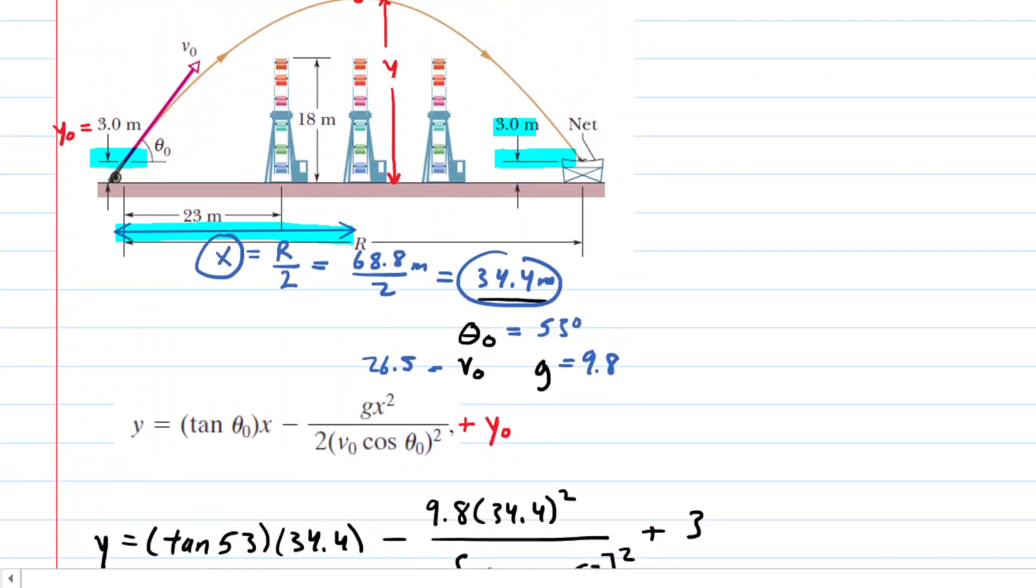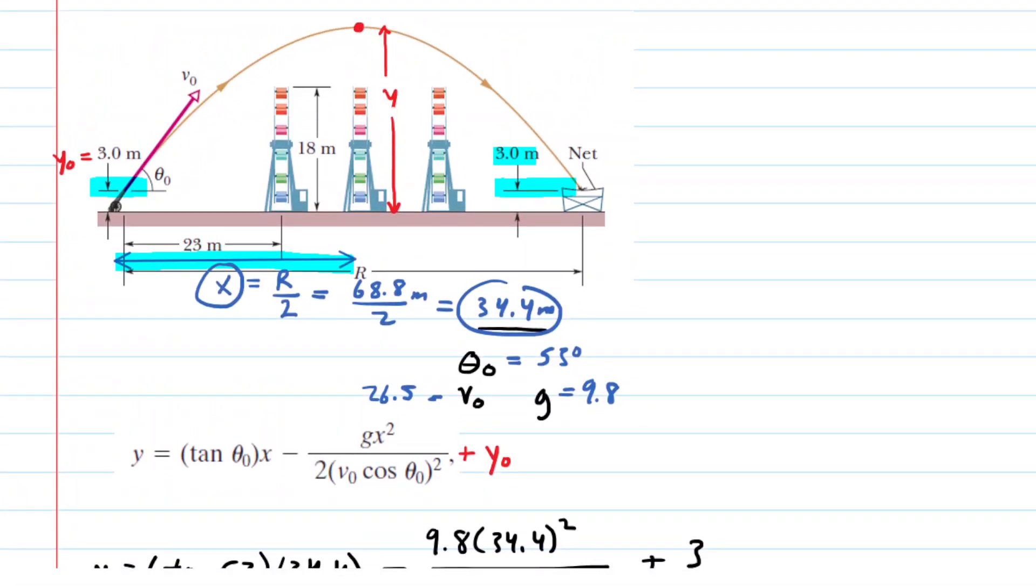We return to the figure to understand what to do next. That Y value right here is 25.9 meters. We're looking for the clearance right here, so we're going to call that C. Same approach again. We'll take the 18 meter height of that Ferris wheel, add the clearance, and set that equal to 25.9 meters. Subtract 18 from both sides and you should get a clearance of about 7.85 or 7.9 meters. That is the correct answer to part B.